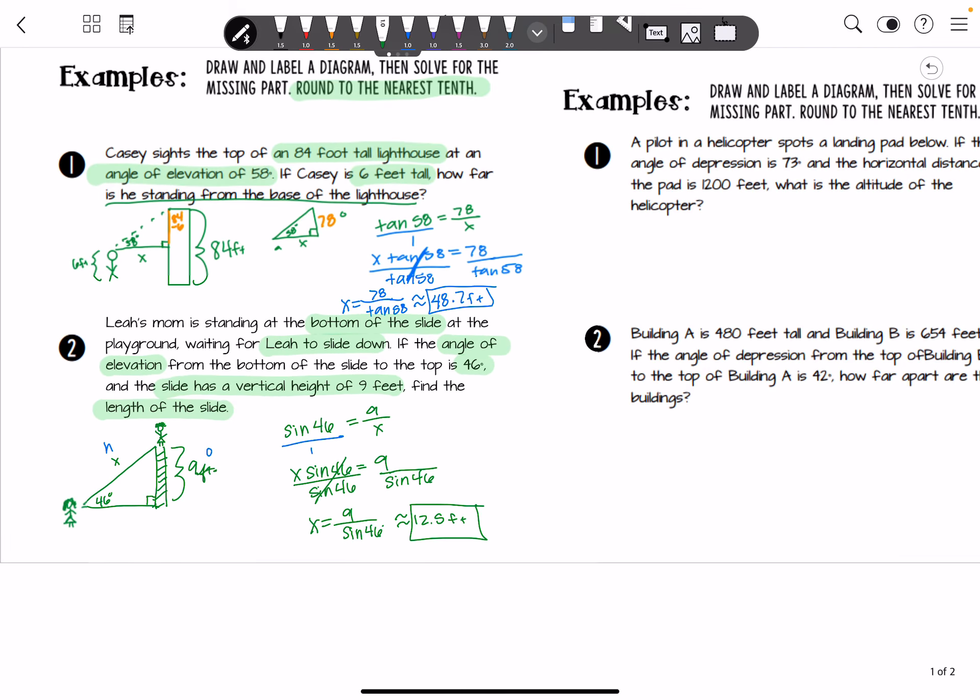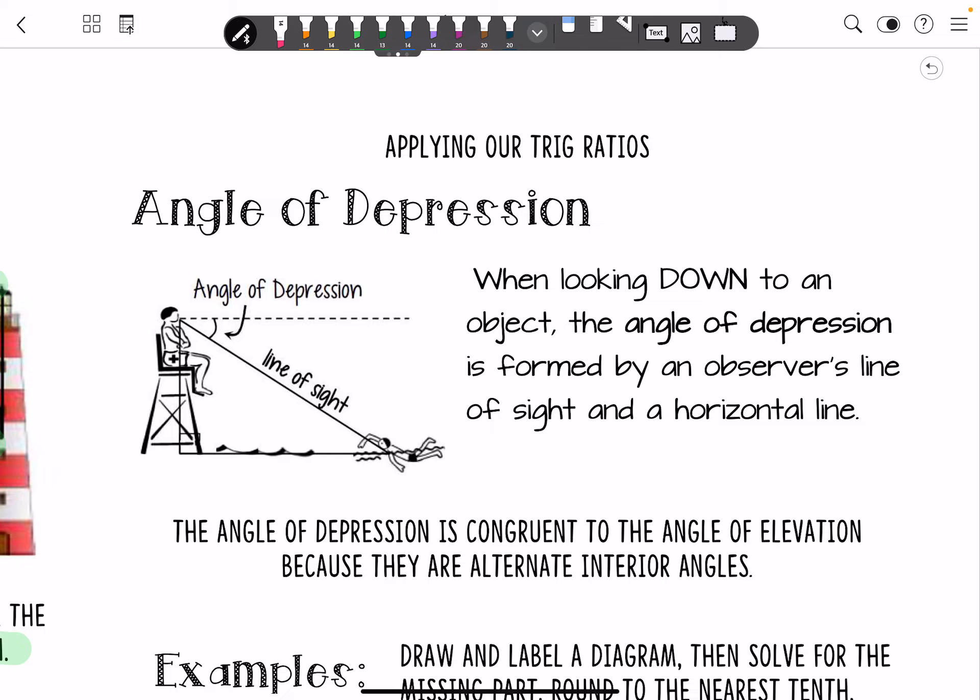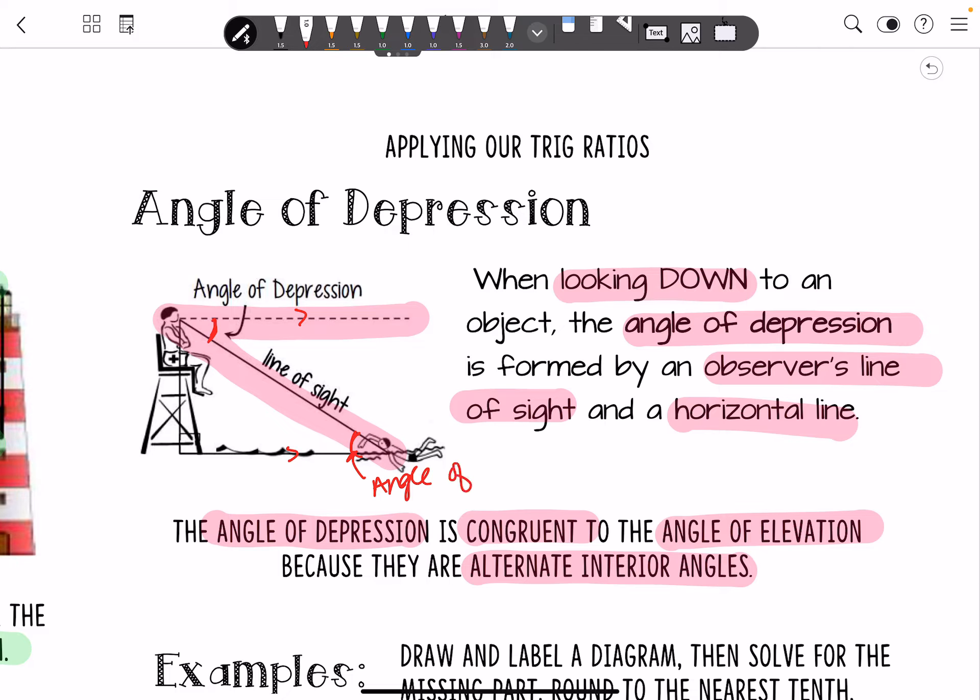All right, now we're going to move on to the angle of depression. Now the angle of depression is when you're looking down to an object. It is formed by an observer's line of sight and a horizontal line, kind of like what we had last time. Now, here's something special we need to note. The angle of depression is congruent to the angle of elevation, and that's because they are alternate interior angles. The angle of depression and the angle of elevation, those are both horizontal lines being formed. So that swimmer is looking up at the same angle that the lifeguard is looking down at him or her.